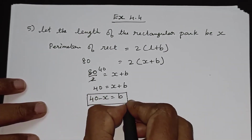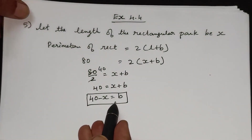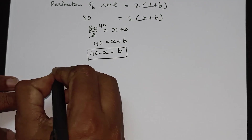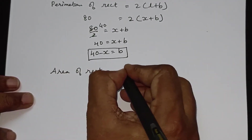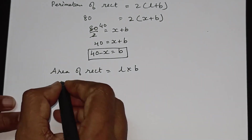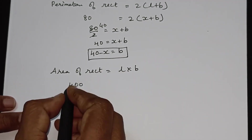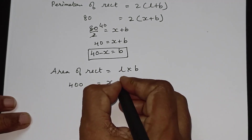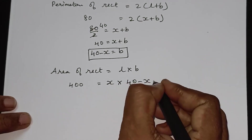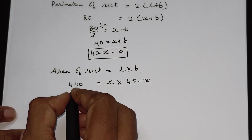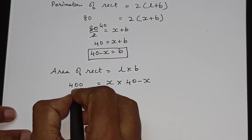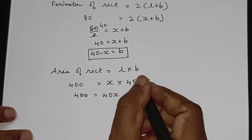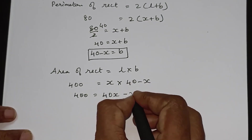Now the area of a rectangle formula is L into B. The area of the rectangle is 400 square meters, so 400 is equal to l × b, which is x into b.